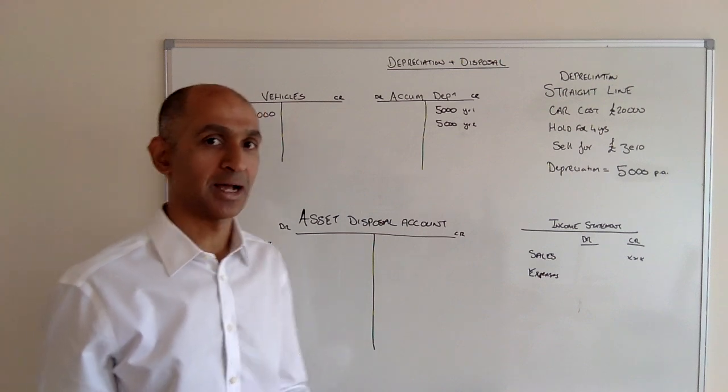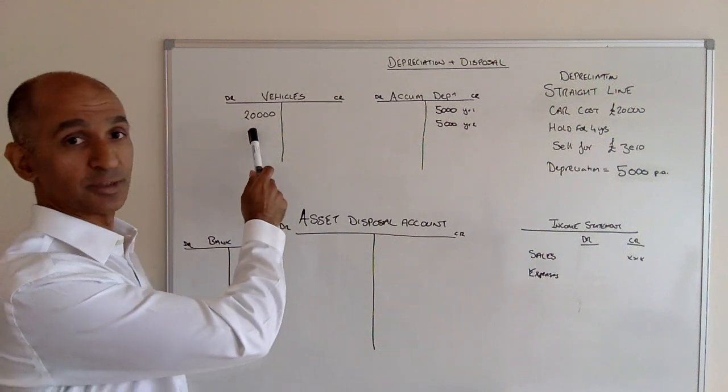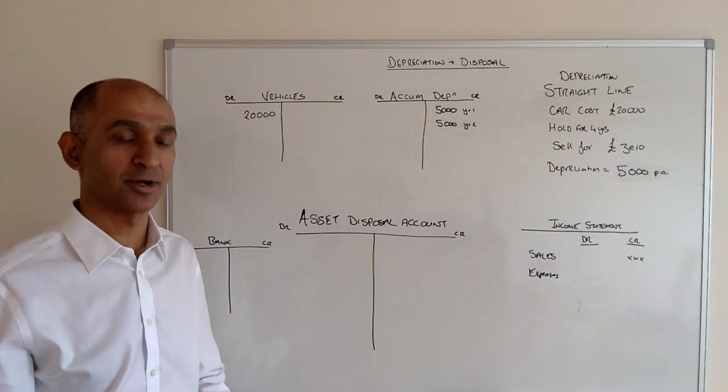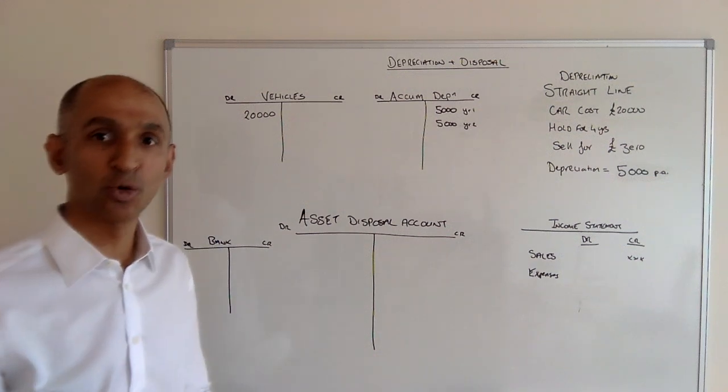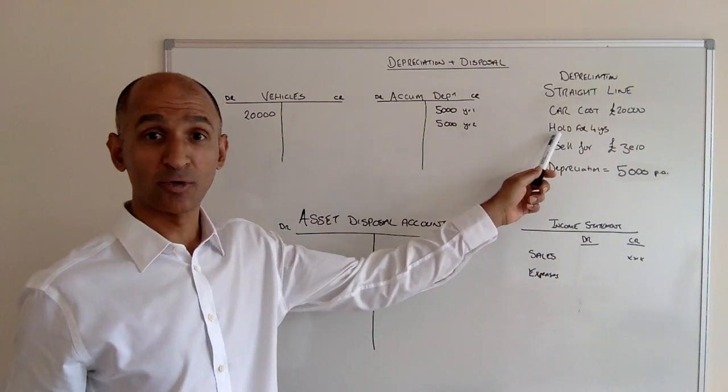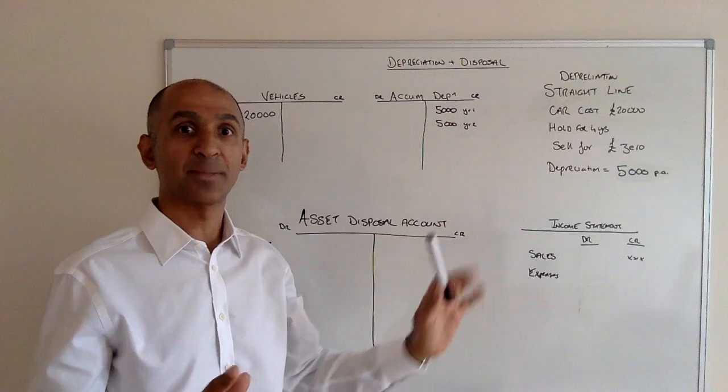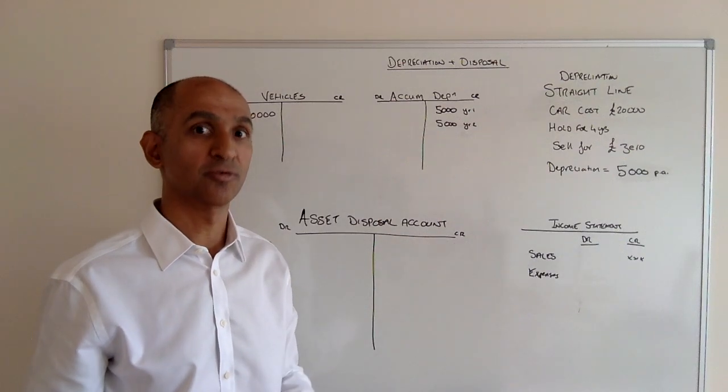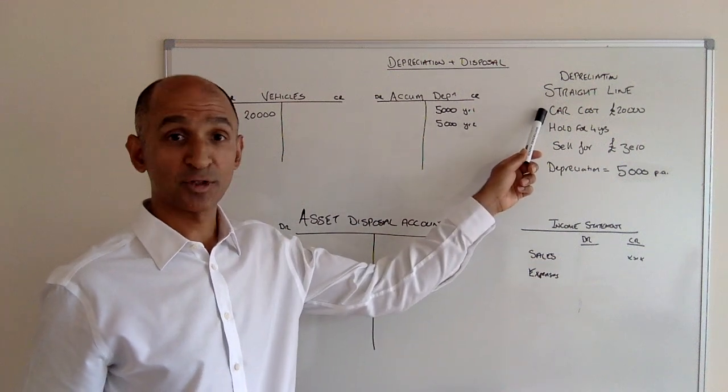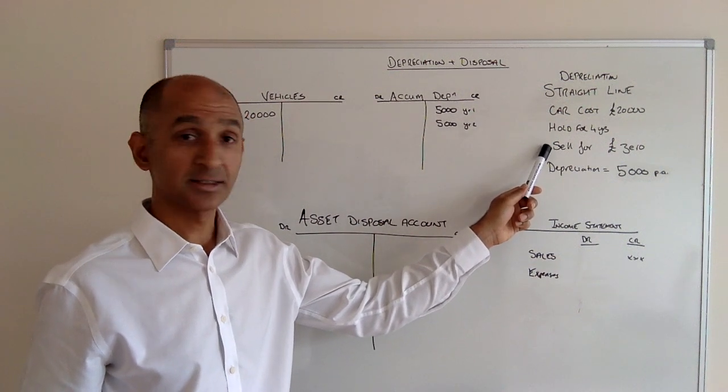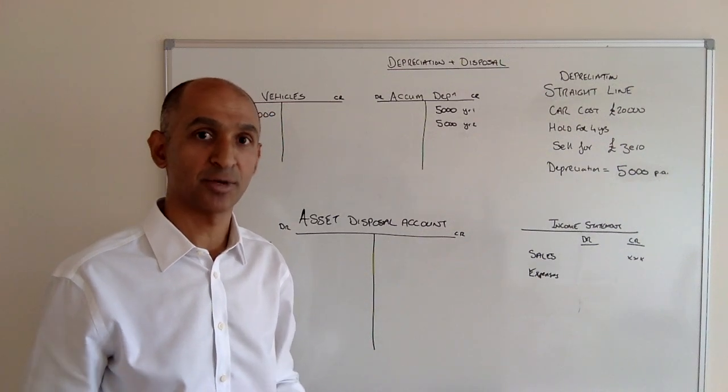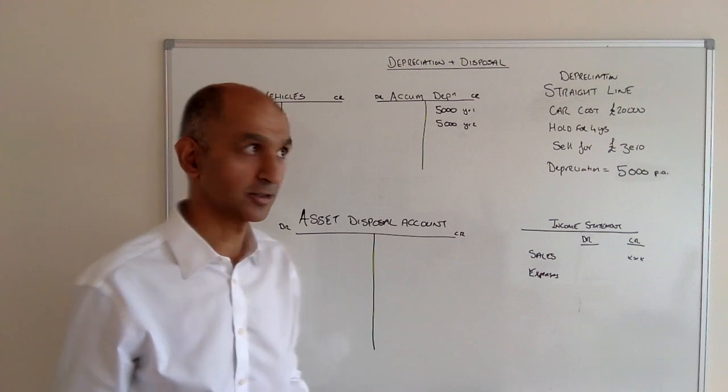So let's assume for example that this company has a vehicle which it purchased for £20,000. It paid cash, bought the vehicle for £20,000, and intends to hold this vehicle for four years. It's going to be worth scrap at the end, so there's no value left at the end of four years. Using straight-line depreciation, that gives £5,000 per year. Nice, simple, straightforward figures.